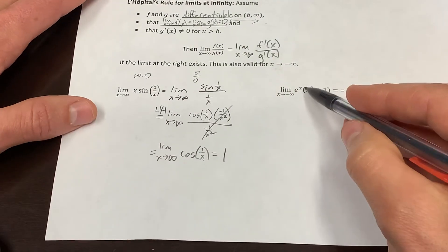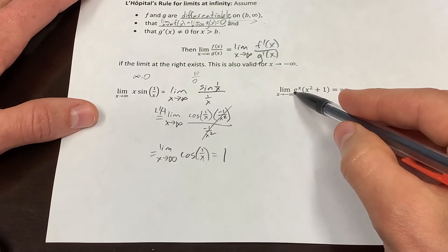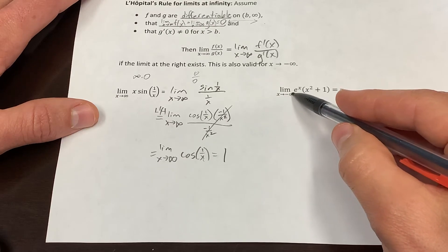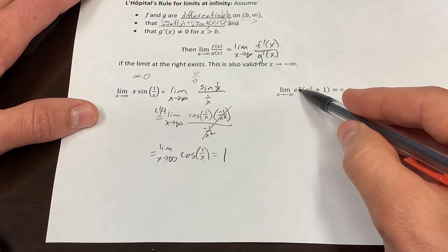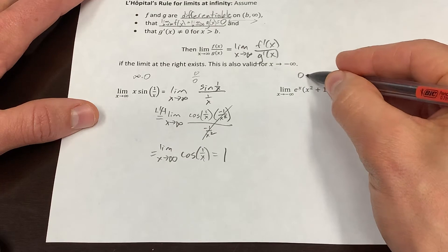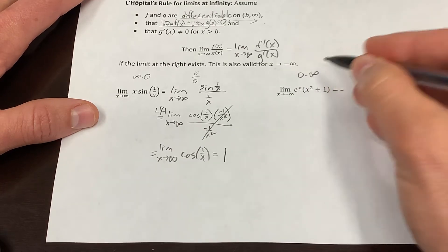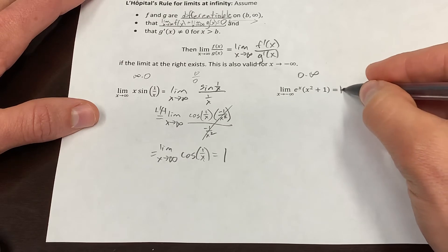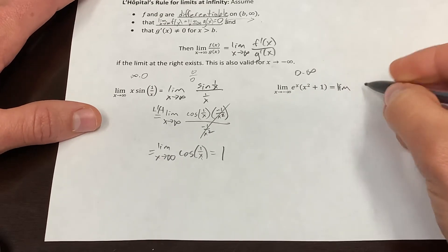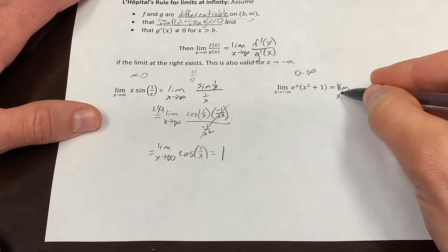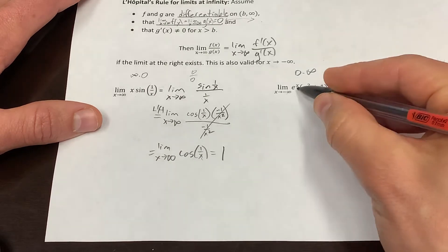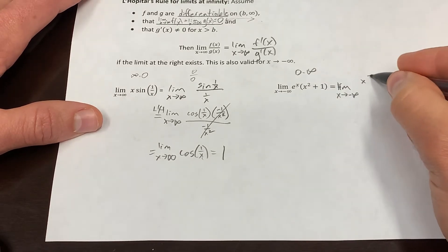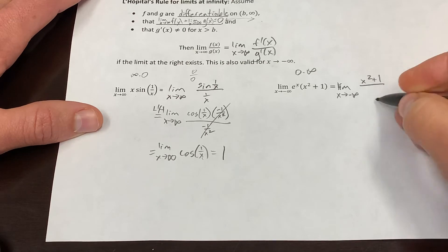How about this over here? You can sort of see x to the negative infinity, x to the negative infinity is getting close to zero. This is getting close to infinity. Let's see what happens there. I'd really like that to be a fraction. Perhaps it's easiest to move the e to the x to the denominator. E to the negative x.